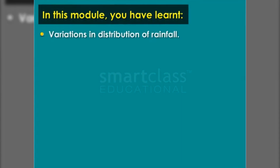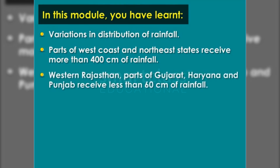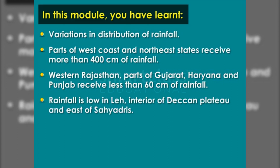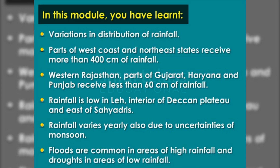Variations in Distribution of Rainfall: Parts of the west coast and northeastern states receive more than 400 centimetres of rainfall. Western Rajasthan, parts of Gujarat, Haryana and Punjab receive less than 60 centimetres. Rainfall is low in Leh, the interior of the Deccan Plateau, and east of the Sahyadris. Rainfall varies yearly due to uncertainties of the monsoon. Floods are common in areas of high rainfall and drought in areas of low rainfall.